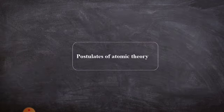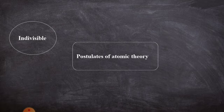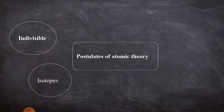Let's see the postulates of modern atomic theory. The first one is: atom is no longer indivisible. It is made up of subatomic particles like electron, proton, and neutron.